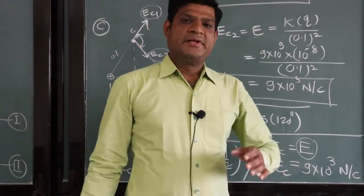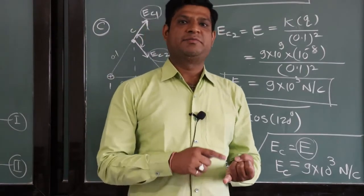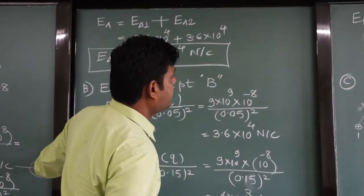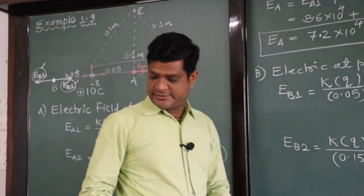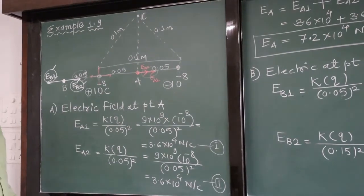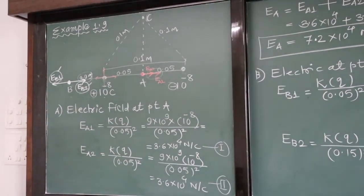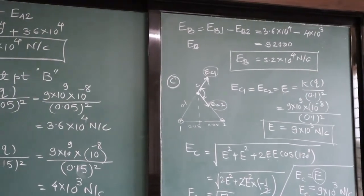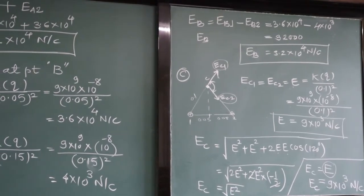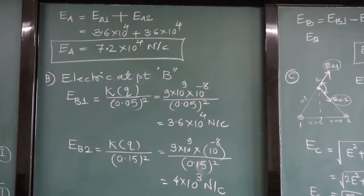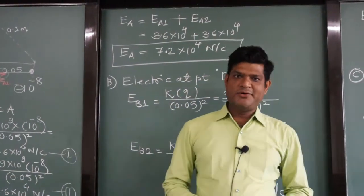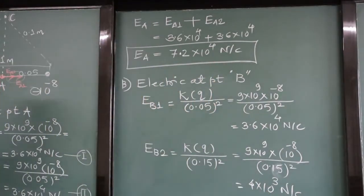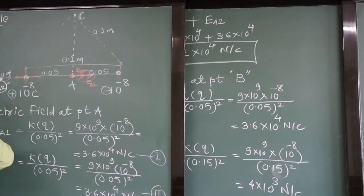In this way we calculated the electric field at point A, electric field at point B, and electric field at point C. These are the three points. You just take a screenshot; this numerical is completed here. Now erasing the board, we are going to see example number 1.10.